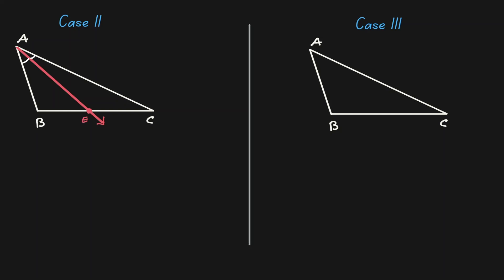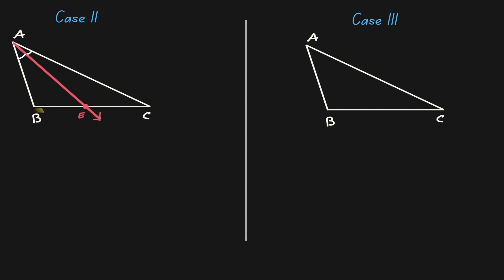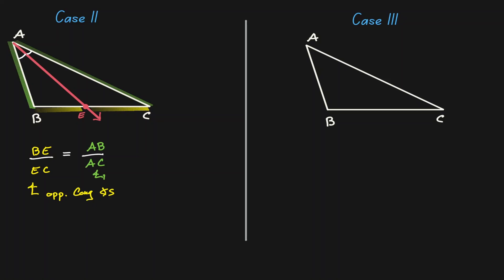Let's call that intersection E. Then the triangle angle bisector theorem says that we get BE, which is the side opposite of the congruent angle on the left, divided by line segment EC, which is opposite of the congruent angle on the right. That would be equivalent to AB over AC. These are the sides opposite of the congruent angles and the sides of our triangle. The numerators BE and AB belong to the triangle on the left, and the denominators EC and AC belong to the triangle on the right.